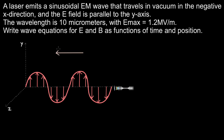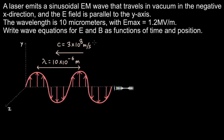This wave is travelling in vacuum, so the speed equals 3 × 10⁸ meters per second. The wavelength is 10 micrometers, which is the distance between adjacent maximas in a sinusoidal wave — that is 10 × 10⁻⁶ meters. The maximum value of the electric field is 1.2 megavolts per meter, which is the amplitude E₀.